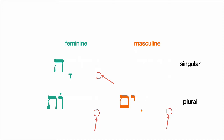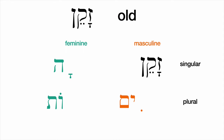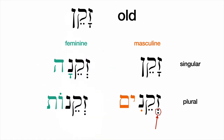Let's do old — zahkane. Zahkane means old. When we make the plural masculine, we won't simply say zahkaneem; we'll reduce that first vowel to a schwa — zahkaneem. So we get to reuse that same rule we learned with gadol: gadol became gadolim, zahkane becomes zahkaneem, and so on.